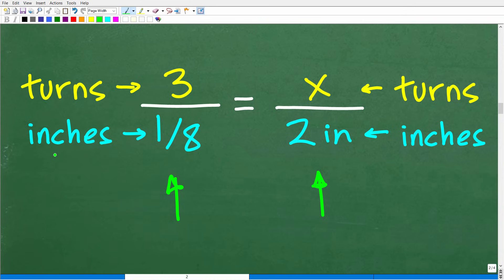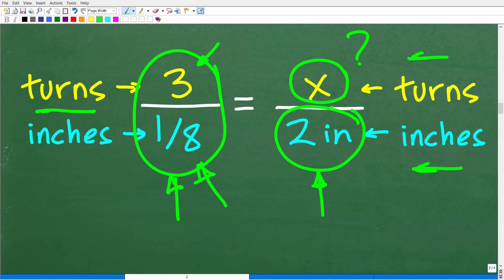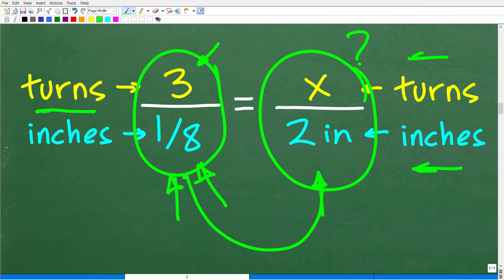Here is our rate: three turns per one-eighth of an inch. What we want to do is compare this to another equal fraction, because two equal fractions is by definition a proportion. Turns is in the numerator and inches is in the denominator. So I'm going to set up another fraction that has the same units in the same place — turns in the numerator and inches in the denominator. So: how many turns (x) does it take to move the screw two inches? Whatever the answer is, it's in proportion to this situation.